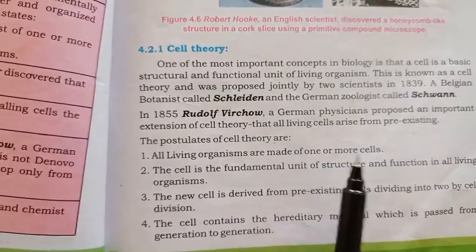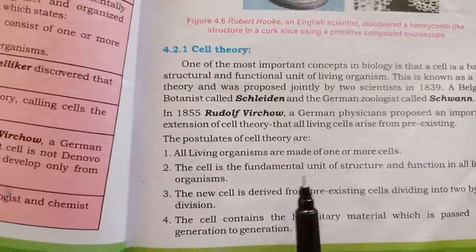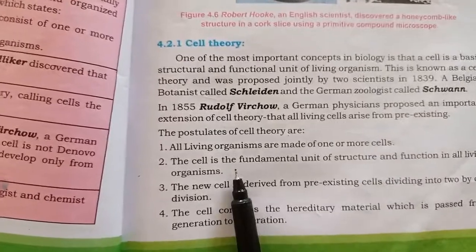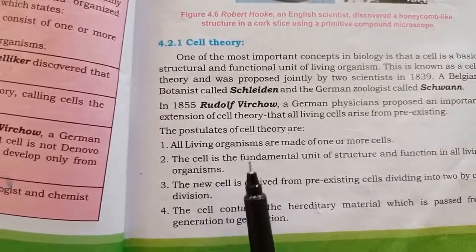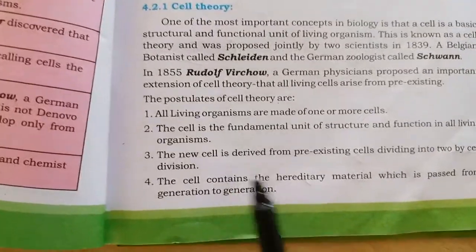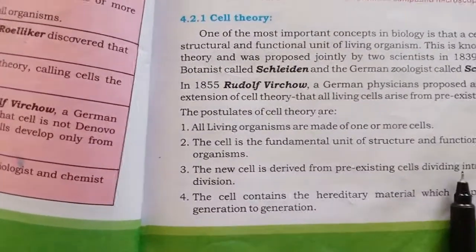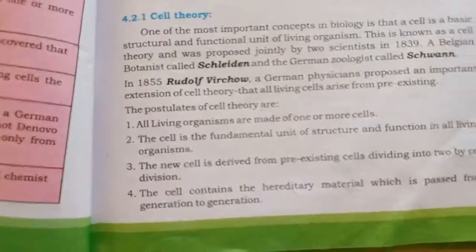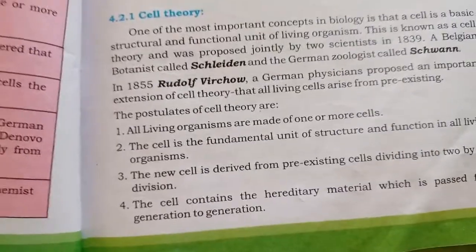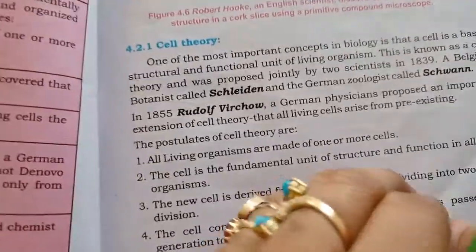Number four: the cell contains the hereditary material which is passed from generation to generation. So in summary: all organisms are made of one or more cells; all structure and function is performed by cells; new cells come from pre-existing cells; and the nucleus at the center of the cell contains all the fundamental hereditary material.